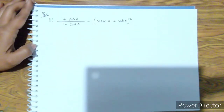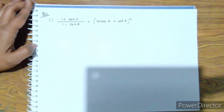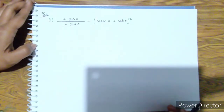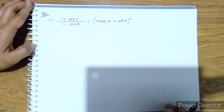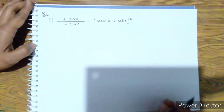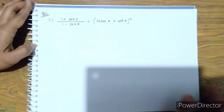Now let's see question number one. The question is: 1 plus cos theta by 1 minus cos theta. The second part is cos theta plus cos theta, whole square.